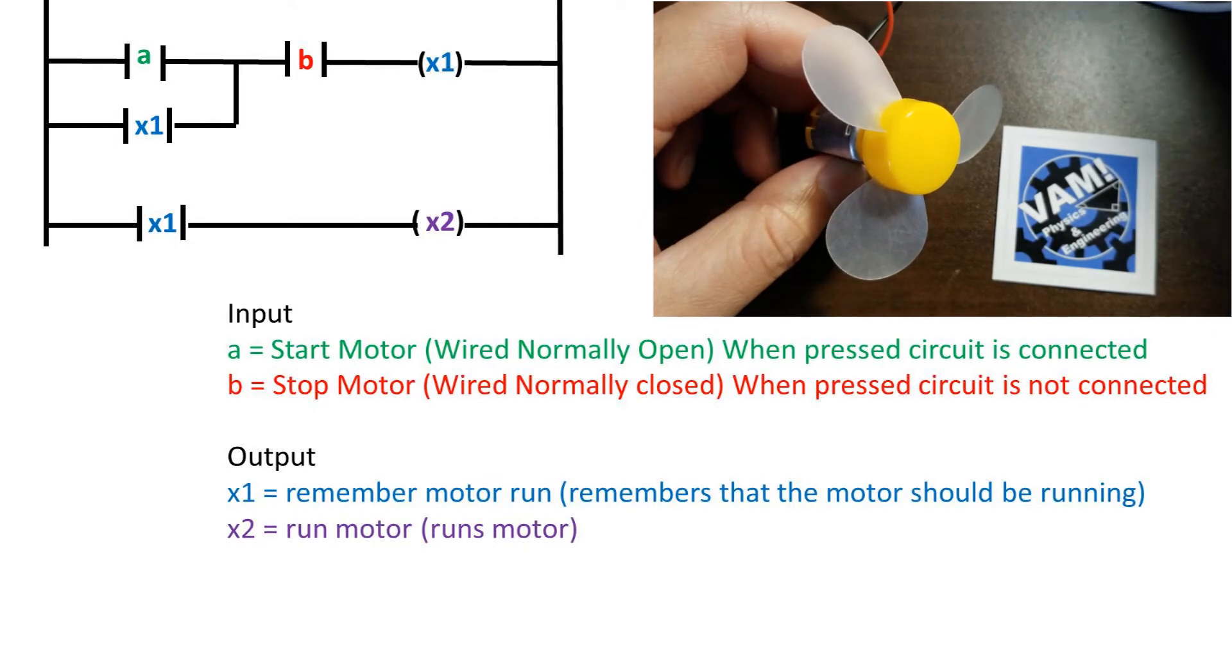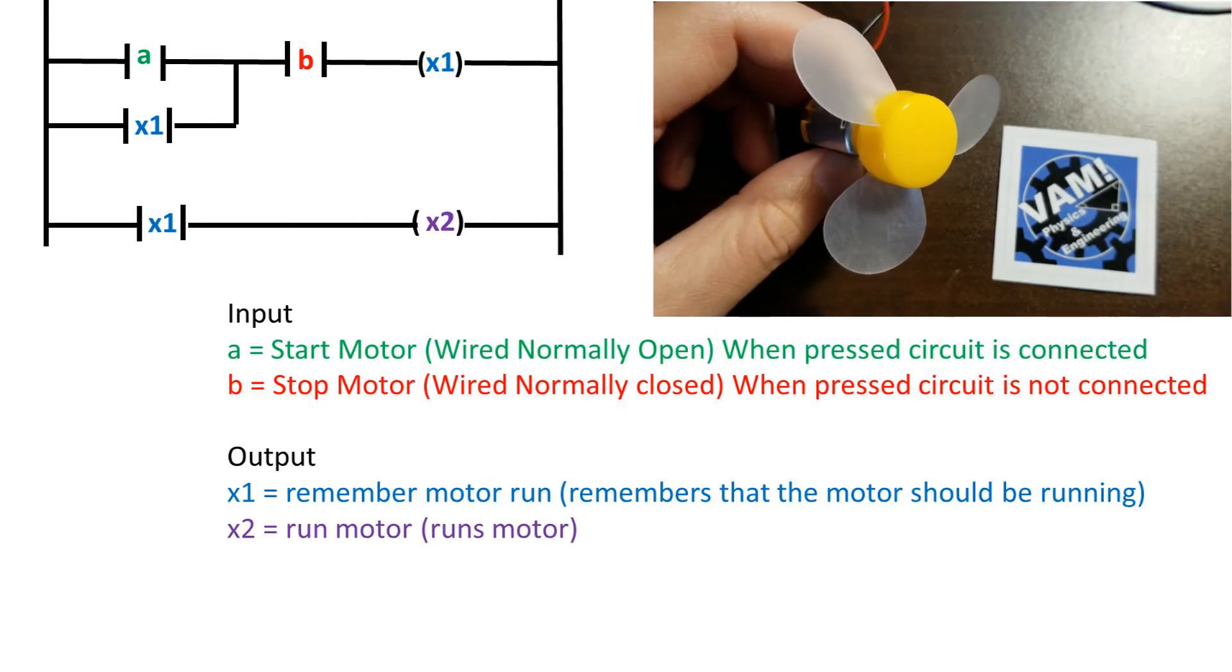We put that same bit in parallel with the start button, or in other words, OR-ed, so that either the start button can be pushed, or it can remember that the start button was pushed, and the motor will run. We then place another rung that has a contact of X1 that, when activated, completes the circuit and powers on the motor, which is coil X2.